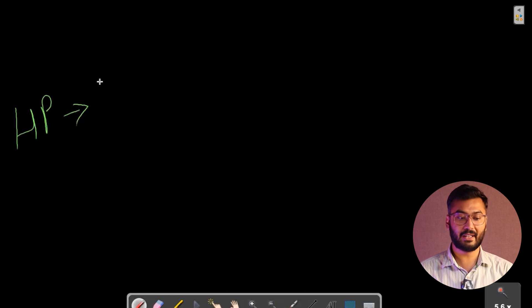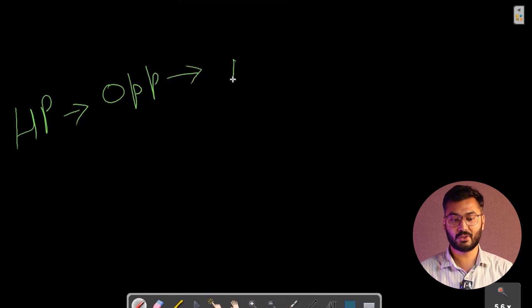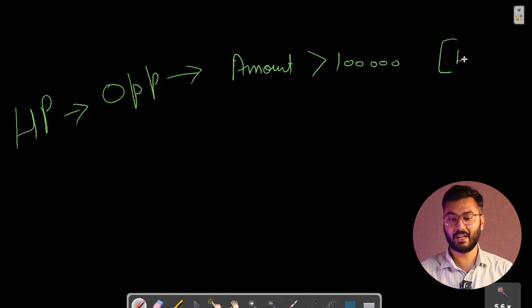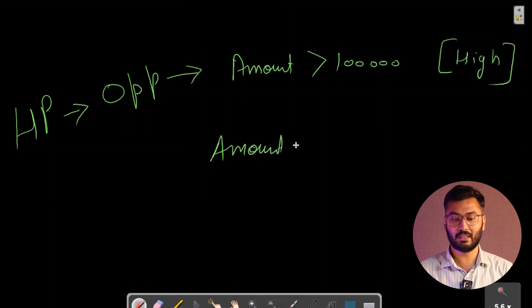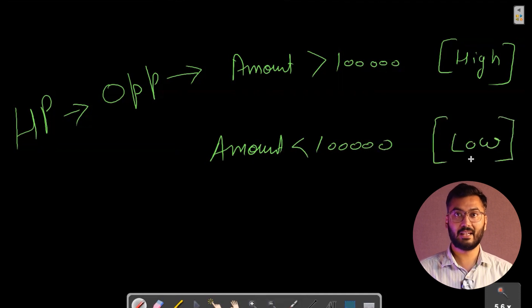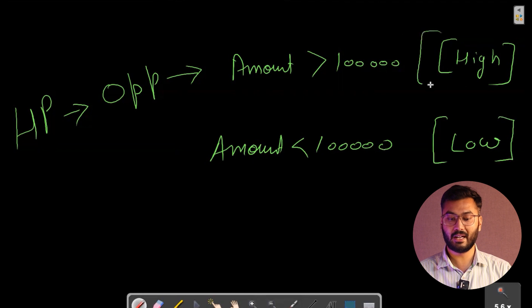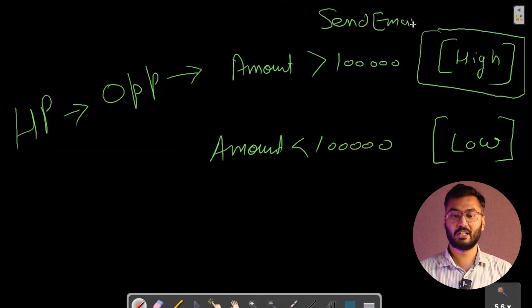Now let's understand this with the help of an example. We will be taking the same example as in fast field updates. There is a company HP, and the employees of HP will be creating opportunities. The requirement is that if the amount of an opportunity is greater than 1 lakh, the priority will be set to high; if the amount is less than 1 lakh, the priority will be set to low. The new requirement is that whenever a high-priority record is created, we need to send emails to our team members.